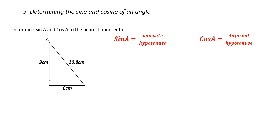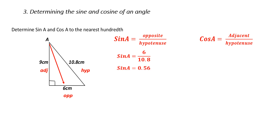What we're looking for here is the ratio — I'm not actually looking for the angle. My first step is to identify the sides. 10.8 is across from the right angle, which makes it the hypotenuse. Looking from angle A, 6 is across from angle A, making it the opposite, and 9 centimeters is beside angle A, making it the adjacent. Sine A equals opposite over hypotenuse, so sine A equals 6 over 10.8. Dividing 6 by 10.8 gives 0.56.